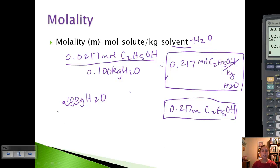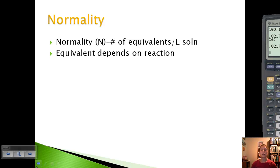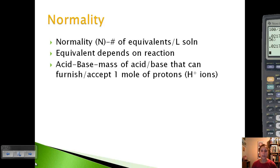Let's talk about the last one, which is normality. Normality is a capital N, and it's the number of equivalents per liter of solution. Equivalent depends on the reaction. For acid-base reactions, it's the mass of acid or base that can either furnish or accept one mole of protons, because acids donate and bases accept H+.